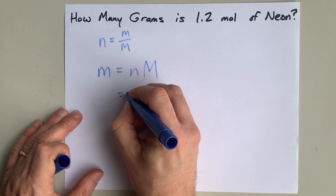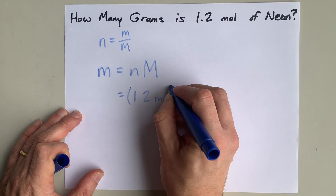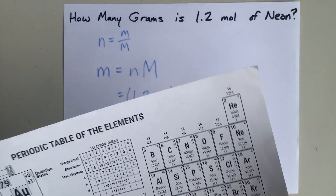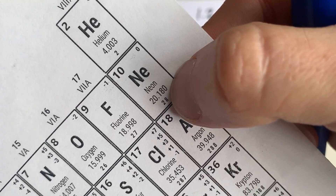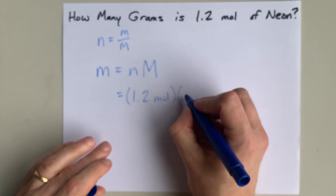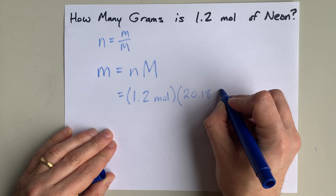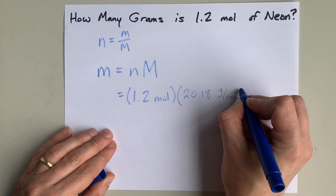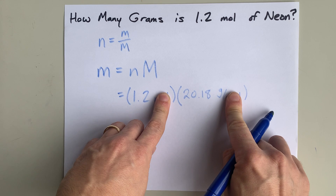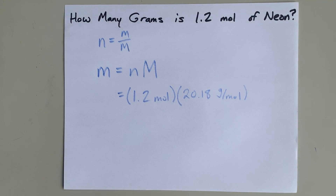We were given moles — that's 1.2. We just need the molar mass of neon. According to my periodic table here, the atomic mass is 20.18. I'm going to write that down and put the units as grams per mole. The moles and the per moles cancel each other out, leaving us with units of just grams.